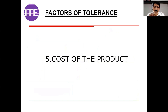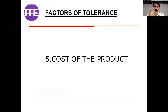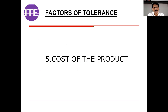The next very important point is the cost of the product. Always think about cost — it should be a parallel thinking in whatever activity you are doing. How can you reduce the cost of the product? By changing the tolerance value.